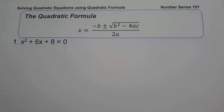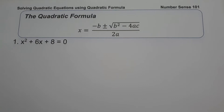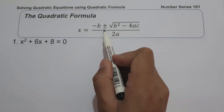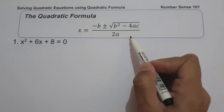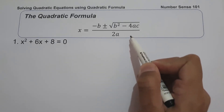For today's video, we are going to talk about solving quadratic equations using the quadratic formula. In our previous video, we discussed how to derive the quadratic formula using the standard form of a quadratic equation. I will link to the description box if you want to find out how to derive it. The quadratic formula is: negative b plus or minus square root of b squared minus 4ac, all over 2a. We are going to use this to find the values of x.